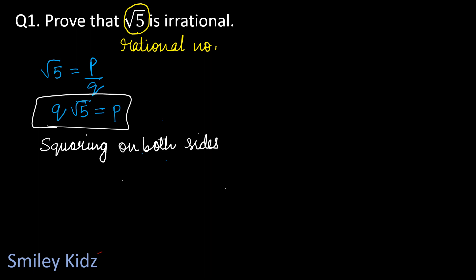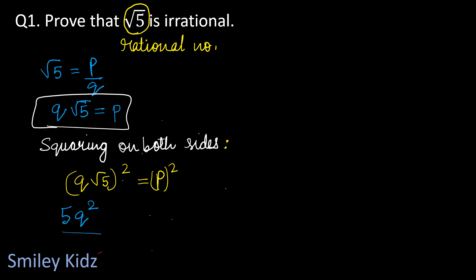Squaring on both sides means both the LHS and RHS of the equation must be squared. That means (q root 5)² equals p². This gives 5q² equals p², because root 5 squared is 5, and q squared is q².